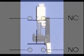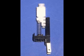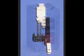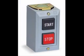Most push-button switches have an internal spring mechanism returning the push-button to its out or unpressed position for momentary operation. The common start-stop switch found in many machines uses two push-button switches, one to turn the machine on and the other to turn it off.